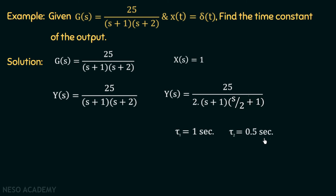The overall time constant of the system is the greater one, which is τ1 equal to 1 second. We will discuss this in detail when we study the concept of the dominant pole. So now we are done with this example.